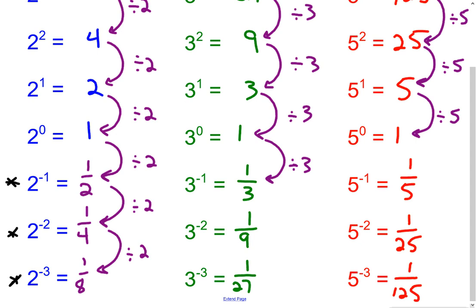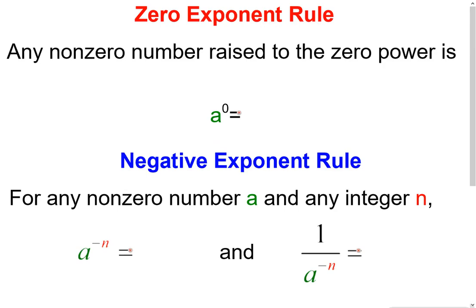The first rule is the zero exponent rule. Think about what 2 to the 0, 3 to the 0, and 5 to the 0 all equal — everything equaled 1. So anything raised to the zero power is 1, unless it's 0 to the 0. We can't do 0 to the 0, but every other number raised to the zero power equals 1.